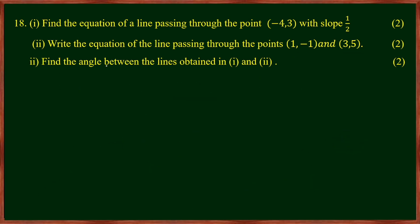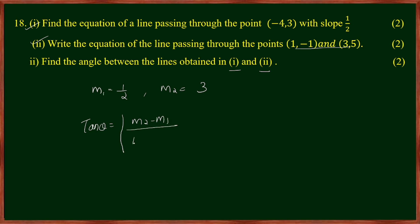Third question: find the angle between the lines obtained in parts 1 and 2. The slopes are m1 = 1/2 and m2 = 3. The formula is tan θ = (m2 - m1) divided by (1 + m1·m2). Substituting: (3 - 1/2) divided by (1 + (1/2)(3)) = (5/2) divided by (5/2).